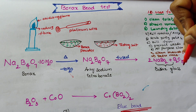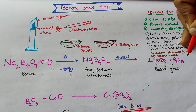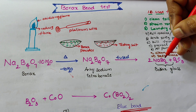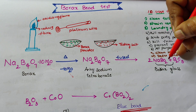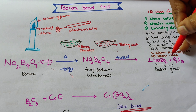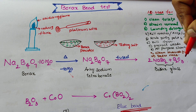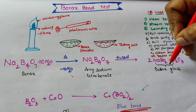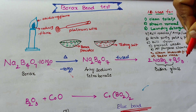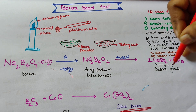The Borax glass is a mixture of NaBO2 and B2O3. NaBO2 is called sodium borate and B2O3 is called boric anhydride. This mixture of NaBO2 and B2O3 is called borax glass.